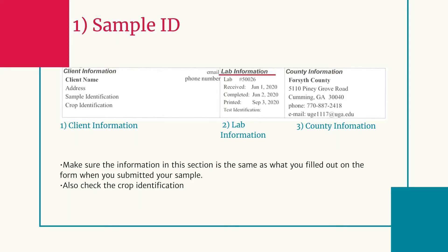After this, there's the lab information subsection. We don't do these soil tests in-house — we don't have the lab equipment to be able to. So we package your soil samples and we send them off to Athens, and one of the UGA soil labs will run the tests for us. After that, you can see the county information subsection. This is for record keeping so that everyone knows what county was associated with the sample.